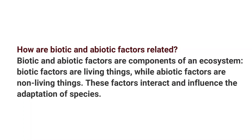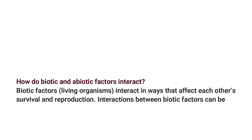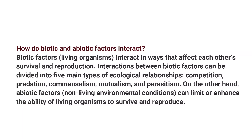How do biotic and abiotic factors interact? Biotic factors, which are living organisms, interact in ways that affect each other's survival and reproduction. Interactions between biotic factors can be divided into five main types of ecological relationships: competition, predation, commensalism, mutualism, and parasitism. On the other hand, abiotic factors — non-living environmental conditions — can limit or enhance the ability of living organisms to survive and reproduce.